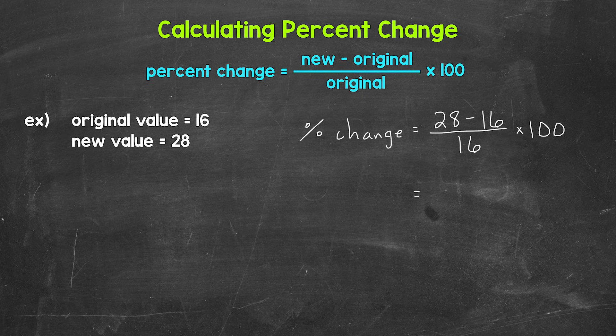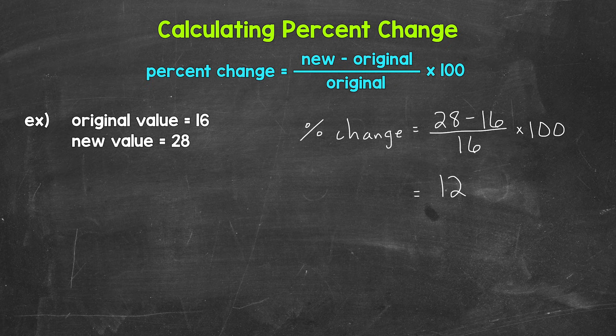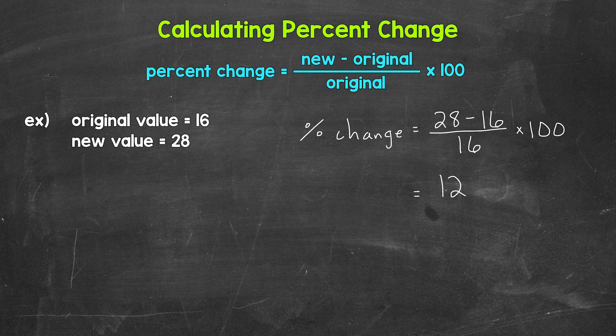Let's start by subtracting here. 28 minus 16 gives us 12. And that's a positive 12. Having a positive there tells us we have an increase. If we end up with a negative, that tells us we have a decrease.